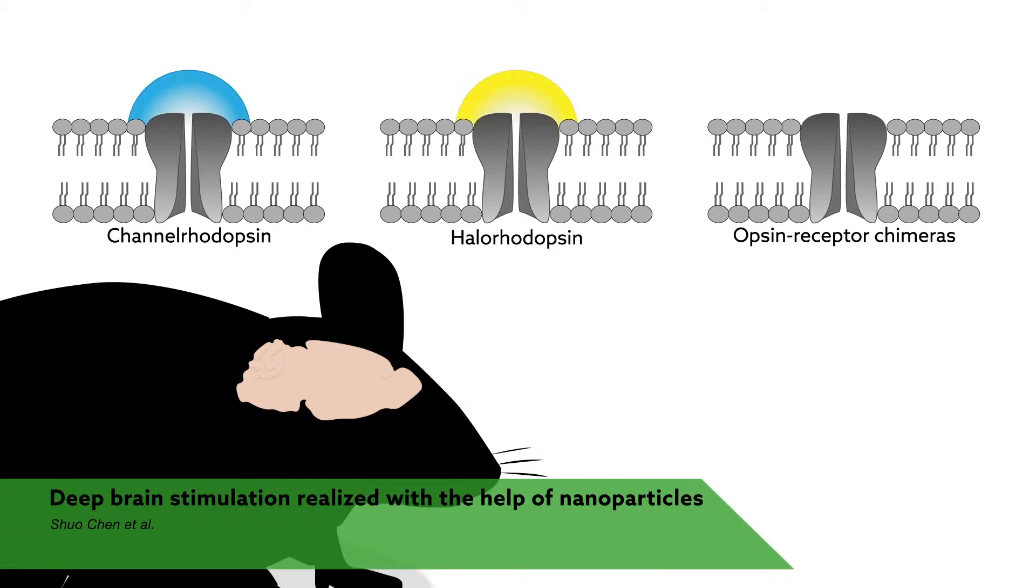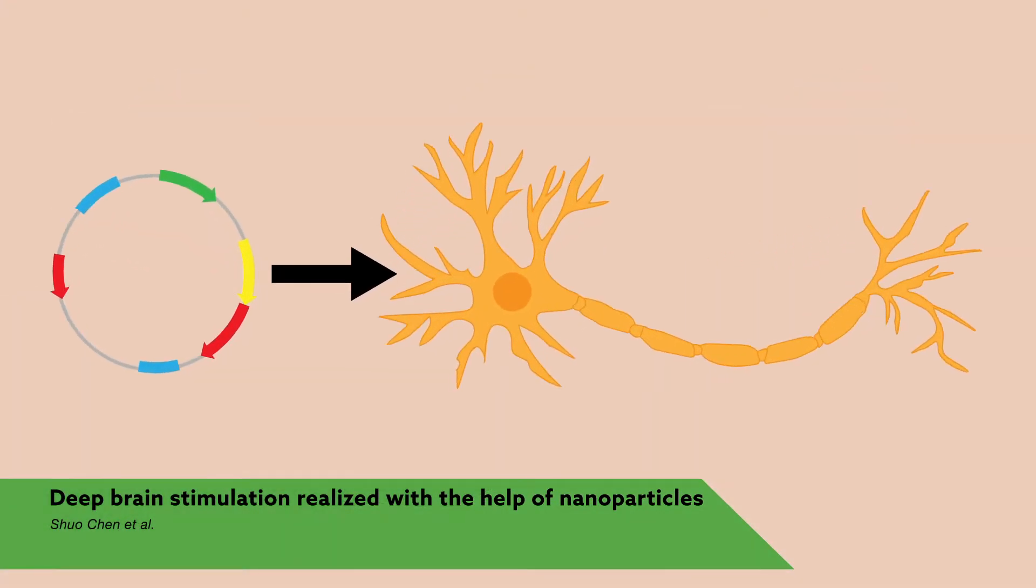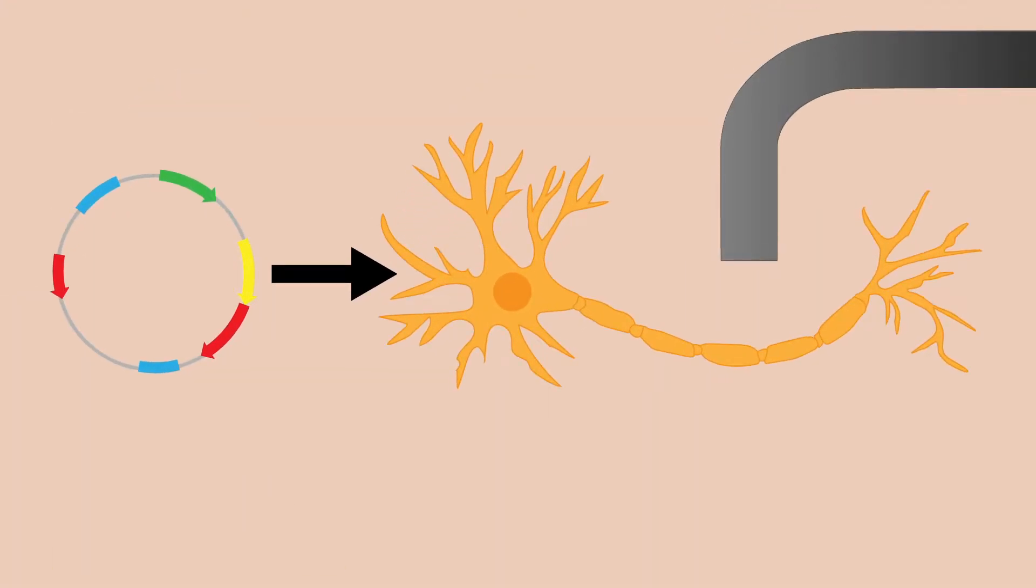Light-responsive proteins have revolutionized our understanding of the brain. By introducing the genes encoding these proteins into neurons and then exciting the cells using lasers, a technique known as optogenetics, individual cells can be rapidly turned on or off, enabling exquisitely sensitive investigations of brain function.